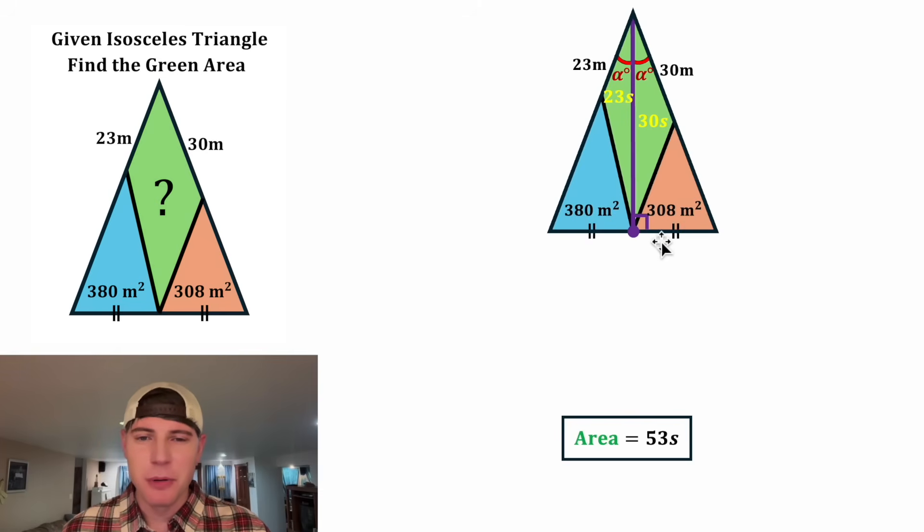In an isosceles triangle, the perpendicular bisector off the base also cuts the area in half. So this left side is equal to the right side. Or in other words, 380 plus 23s is equal to 308 plus 30s. And now we have one equation in terms of one variable. Let's solve for s. First, we can subtract 23s from both sides. And let's subtract 308 from both sides.